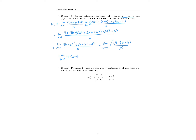Finally, plugging in 0 for h, we get f prime of x equals 4 minus 2x. So f prime of 6 equals 4 minus 2 times 6, which is 4 minus 12, which is negative 8 as required.